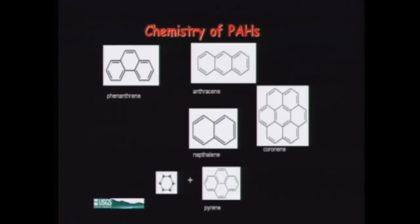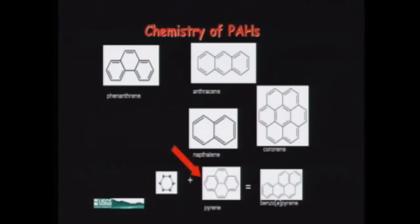There are some more slightly complicated naming conventions that go with PAHs. One of those, which is kind of the poster child of PAHs, is called benzo[a]pyrene. What that means is we take a four-ring pyrene molecule, add a benzene ring to the A position, and that makes benzo[a]pyrene. We're going to get back to benzo[a]pyrene in a couple of slides.